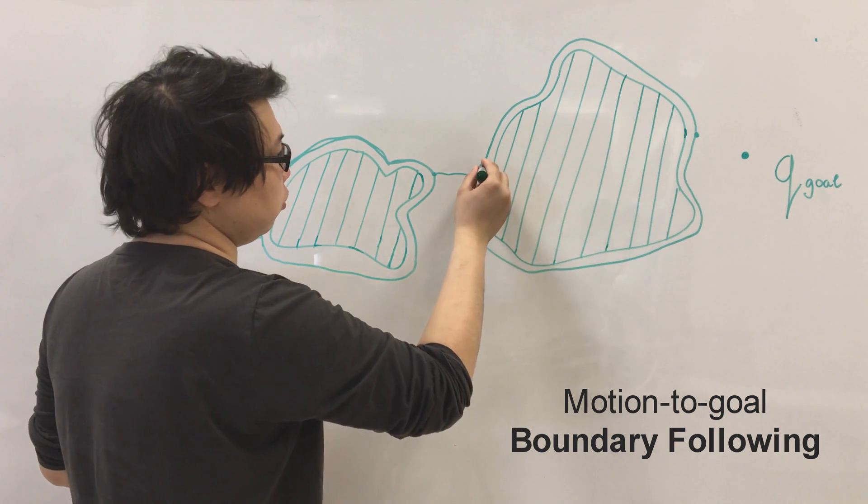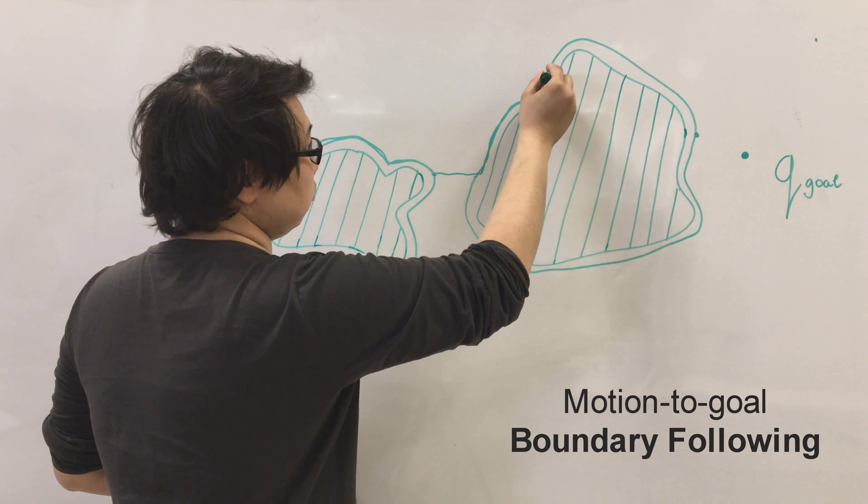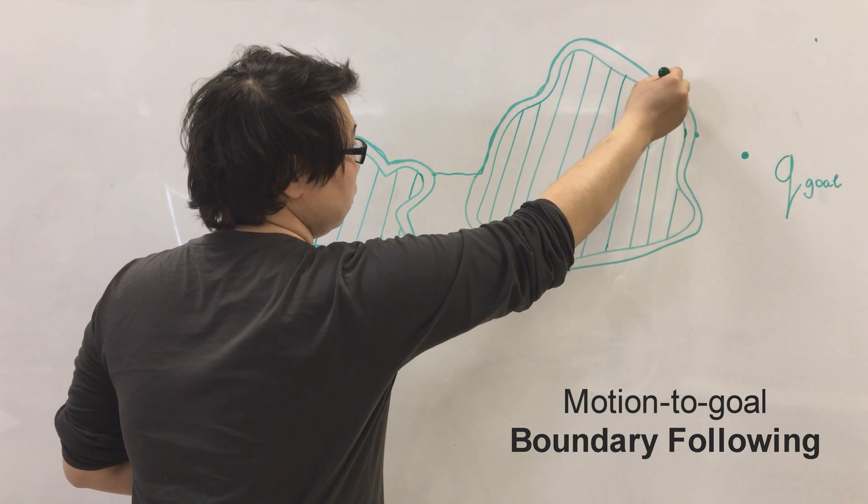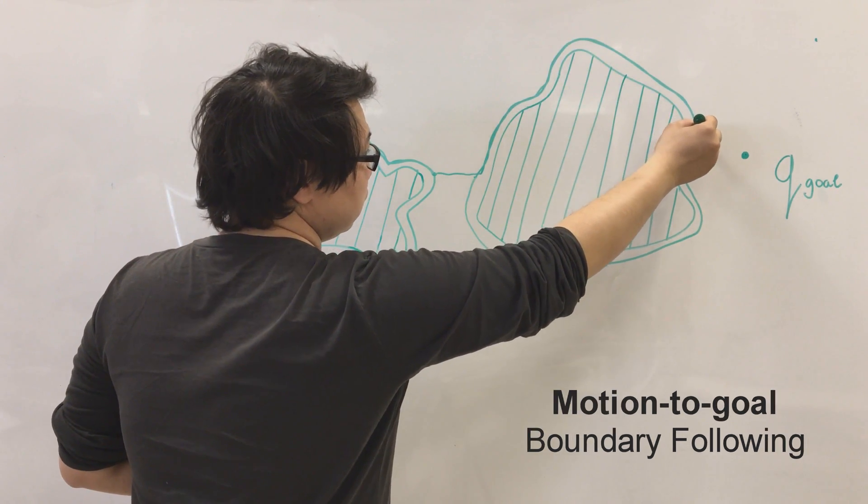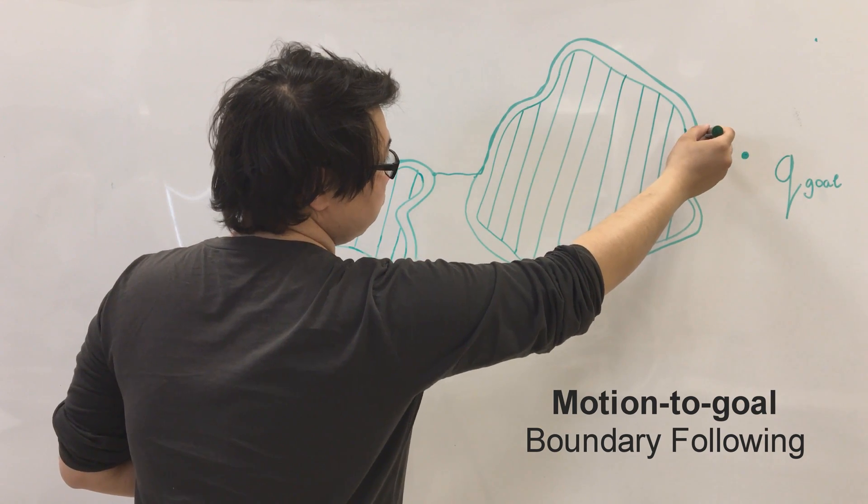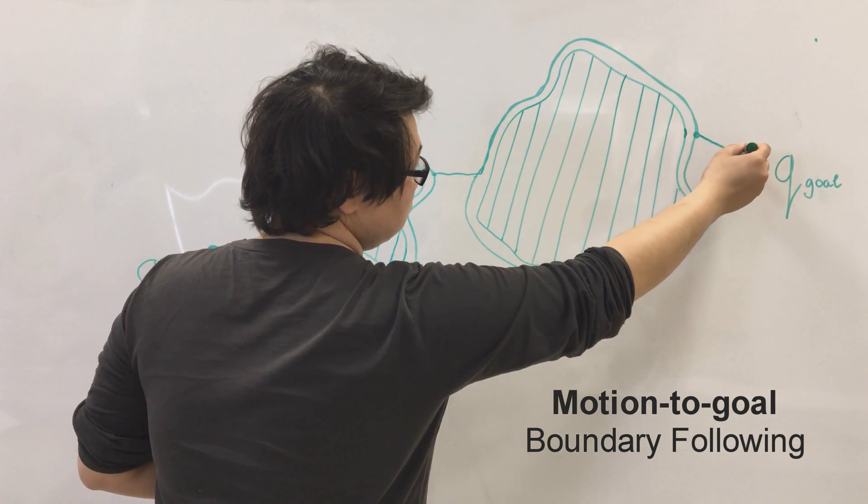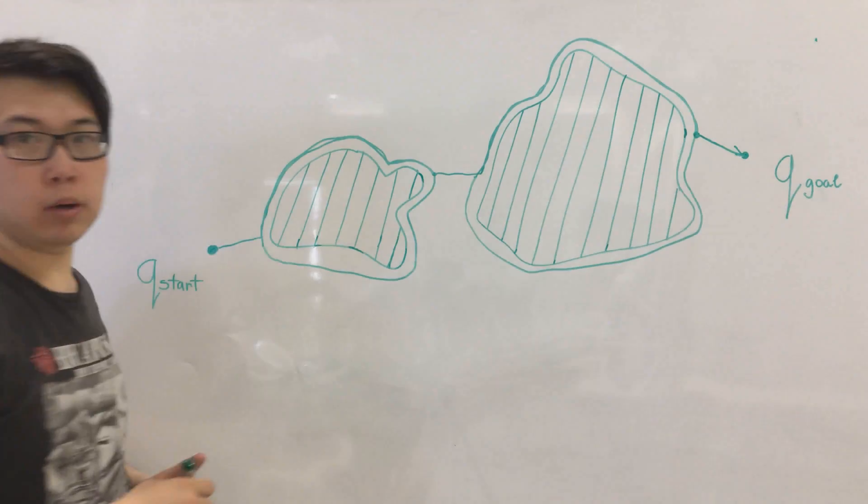So the robot has to go like this one more time. And when it reaches this point we can go straight to the goal. So this was the bug 1 algorithm.